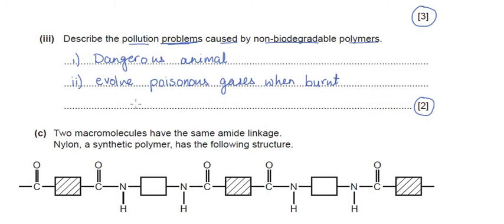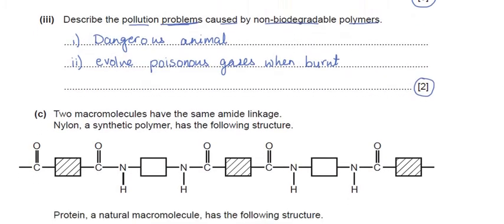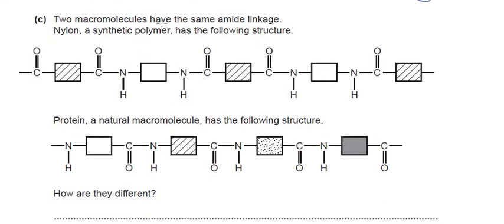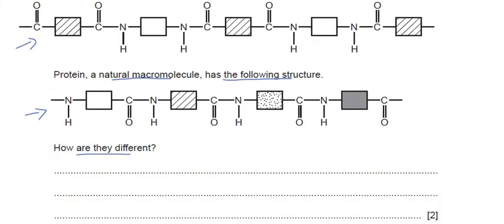The next sub-question says two macromolecules have the same amide linkage as shown in nylon. Nylon, a synthetic polymer, has a given structure; protein, a natural macromolecule, has another structure. How are these two different? In nylon we can identify only two types of monomers that repeat, while in proteins every monomer is different.